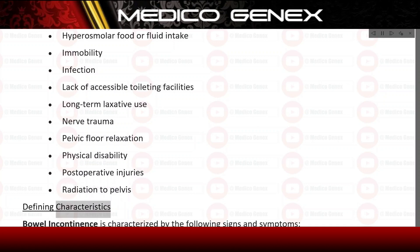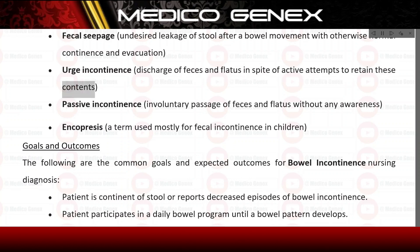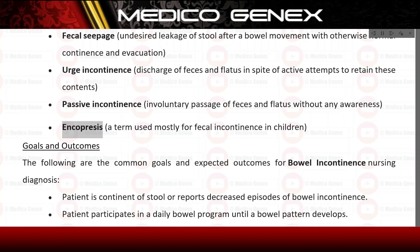Defining characteristics: bowel incontinence is characterized by fecal seepage — undesired leakage of stool after a bowel movement with otherwise normal continence and evacuation; urge incontinence — discharge of feces and flatus despite active attempts to retain; passive incontinence — involuntary passage of feces and flatus without any awareness; and encopresis — a term used mostly for fecal incontinence in children.